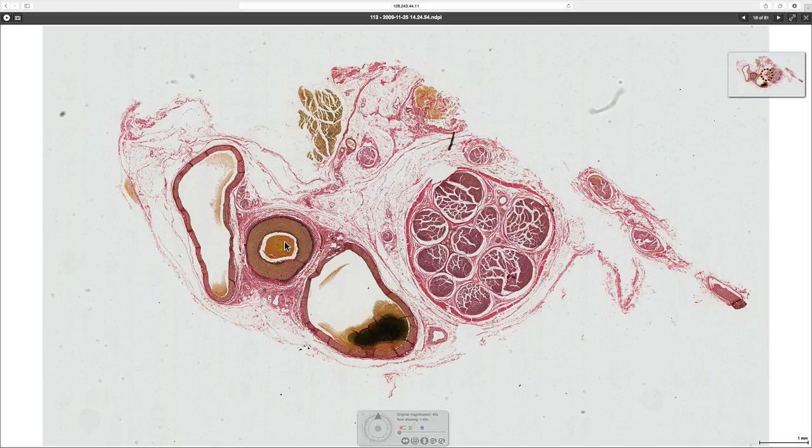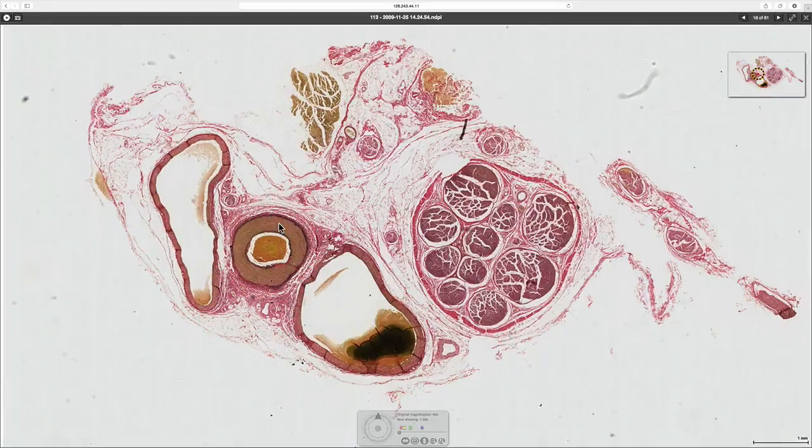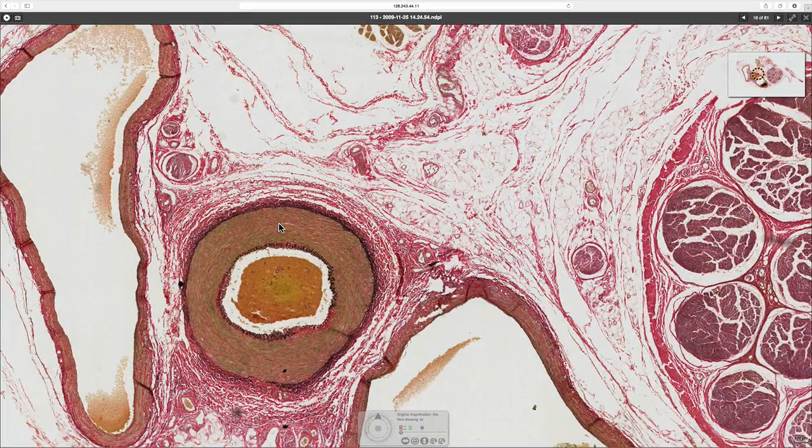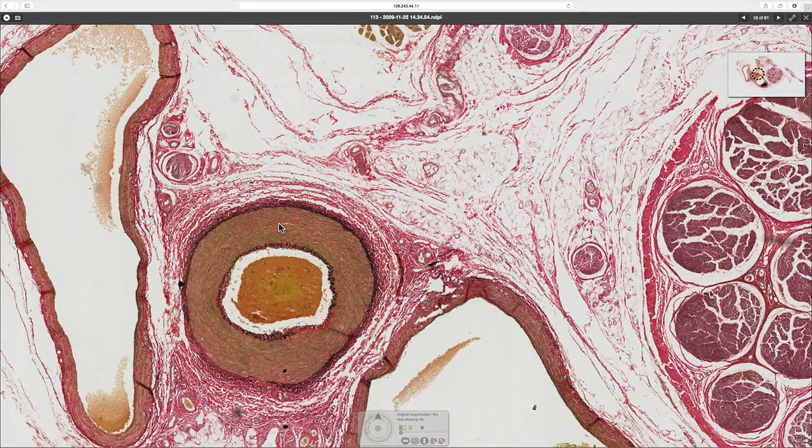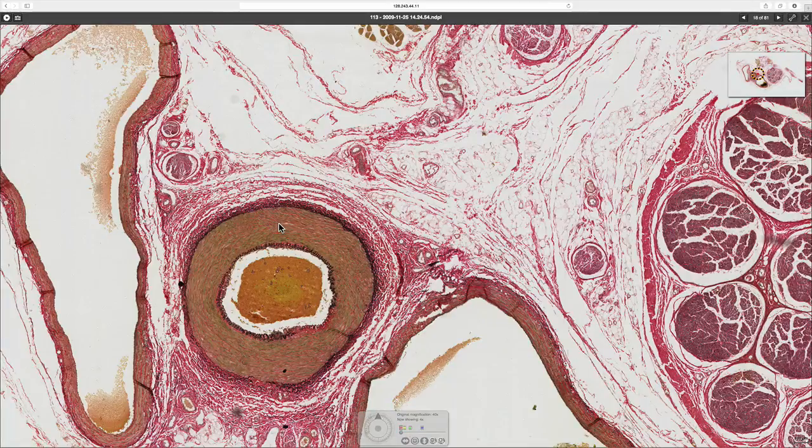Let's have a look at the artery. First of all, the stain that's been used here has elastin in it, which stains black. And that's going to help show us the amount of elastin fibers that there are in this particular artery.